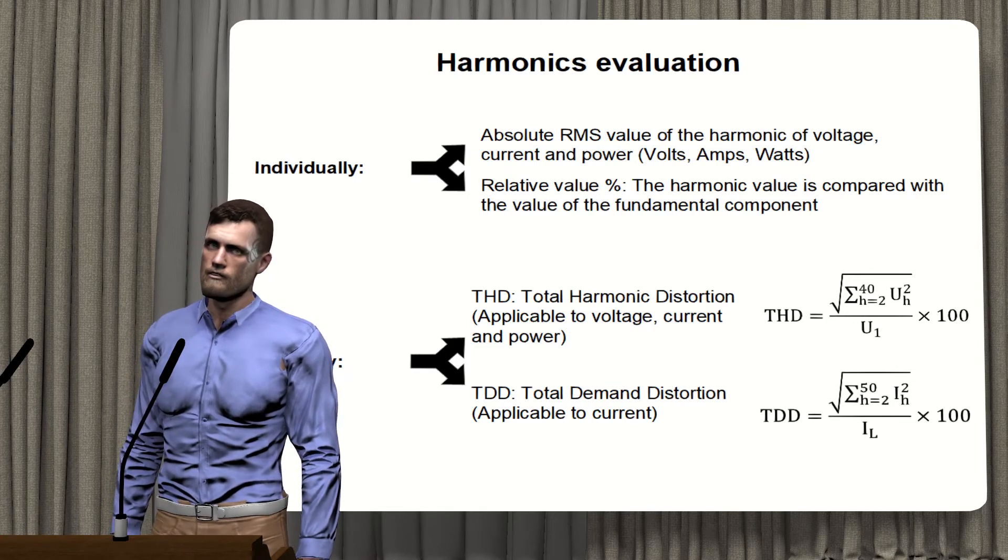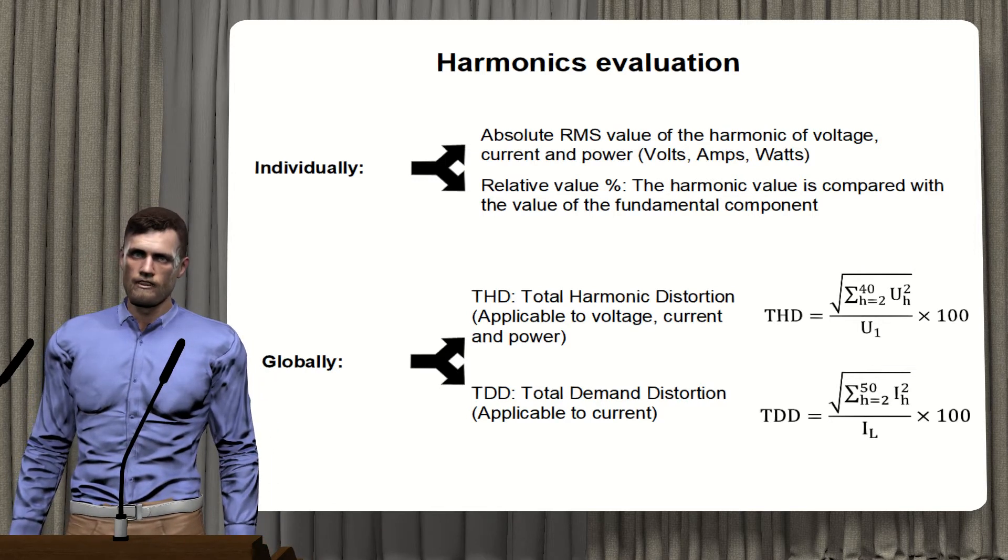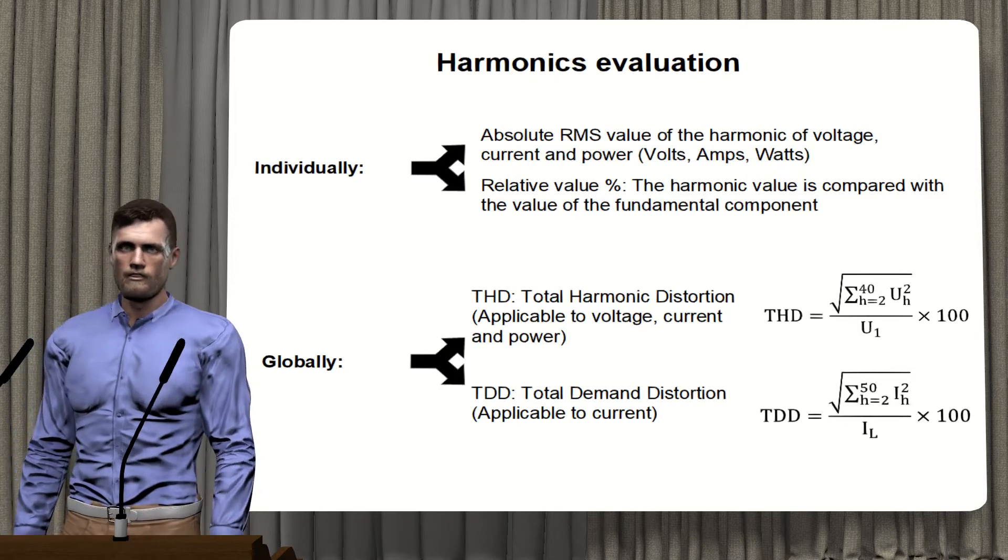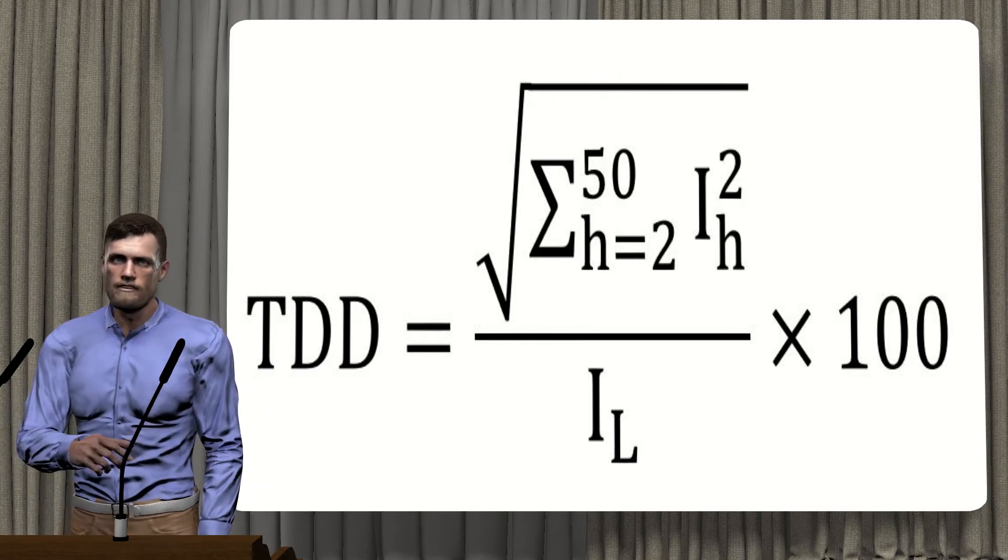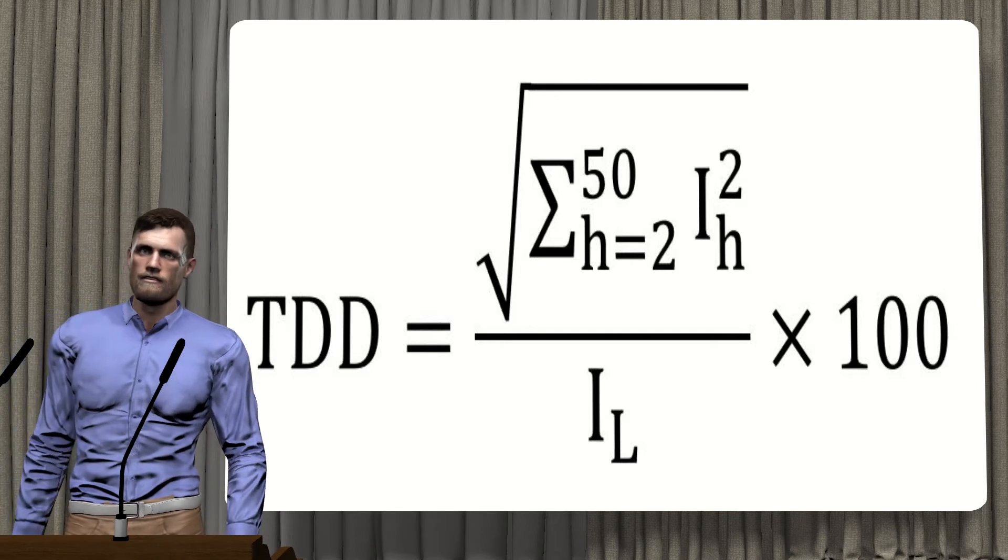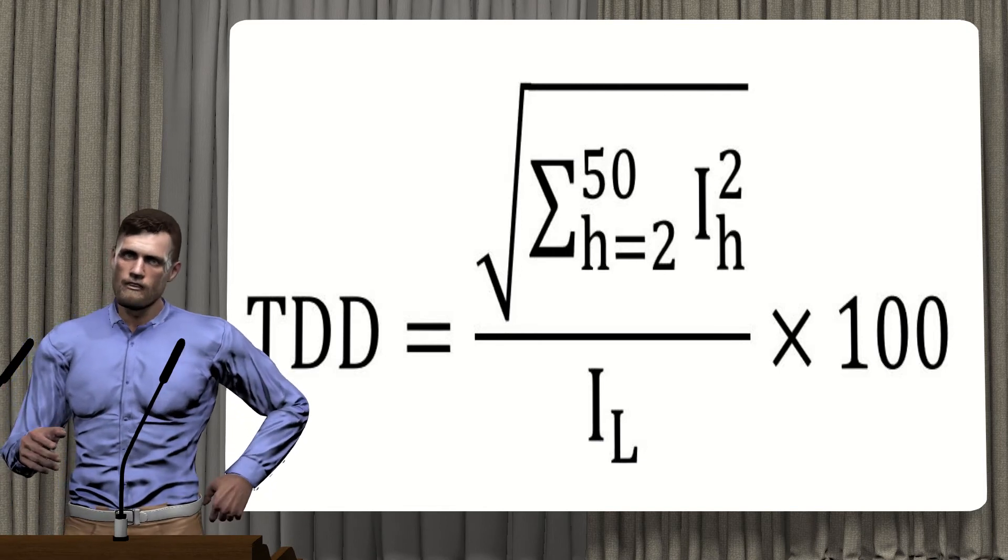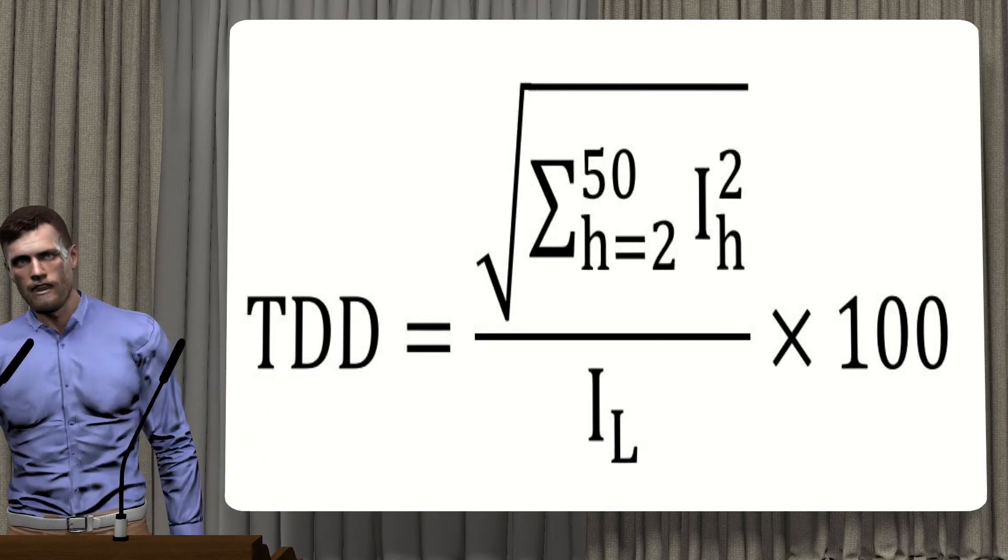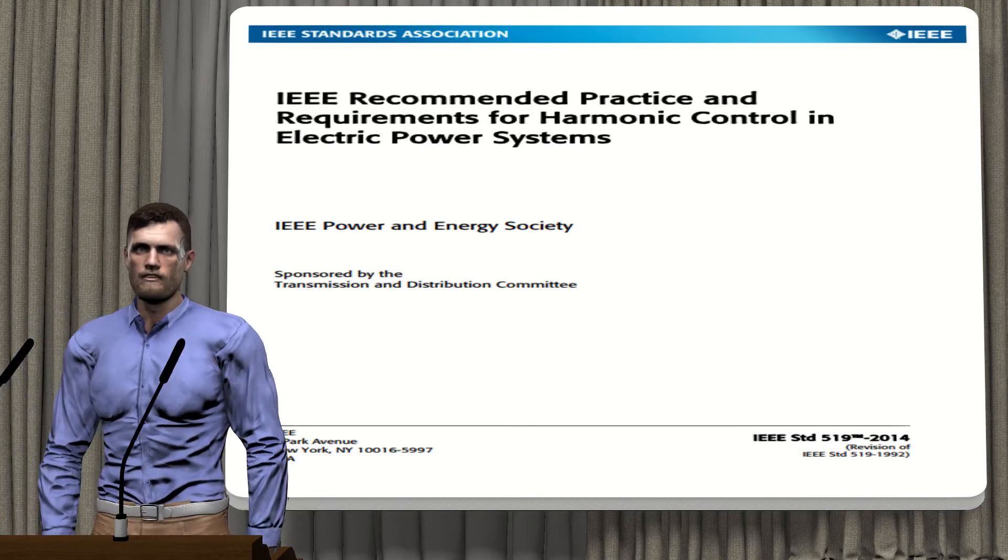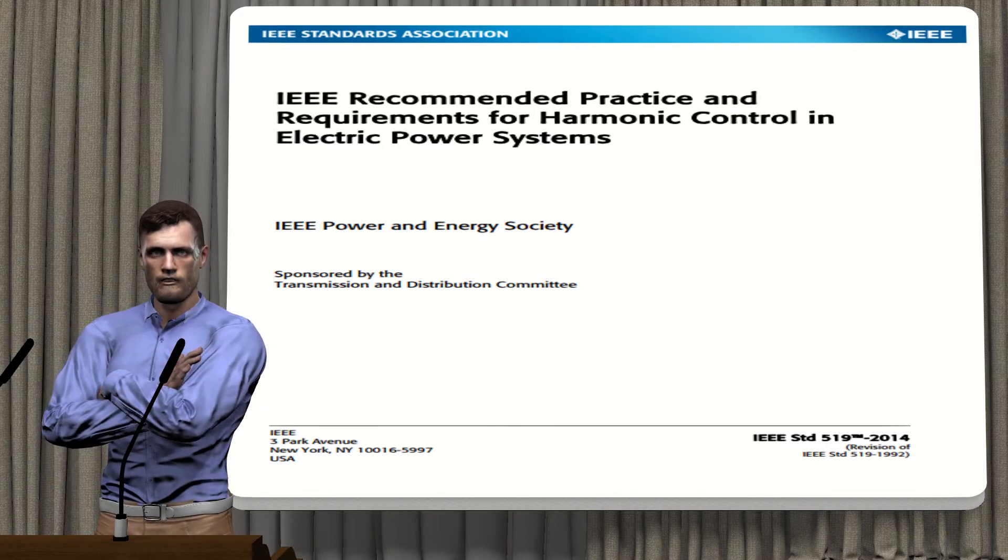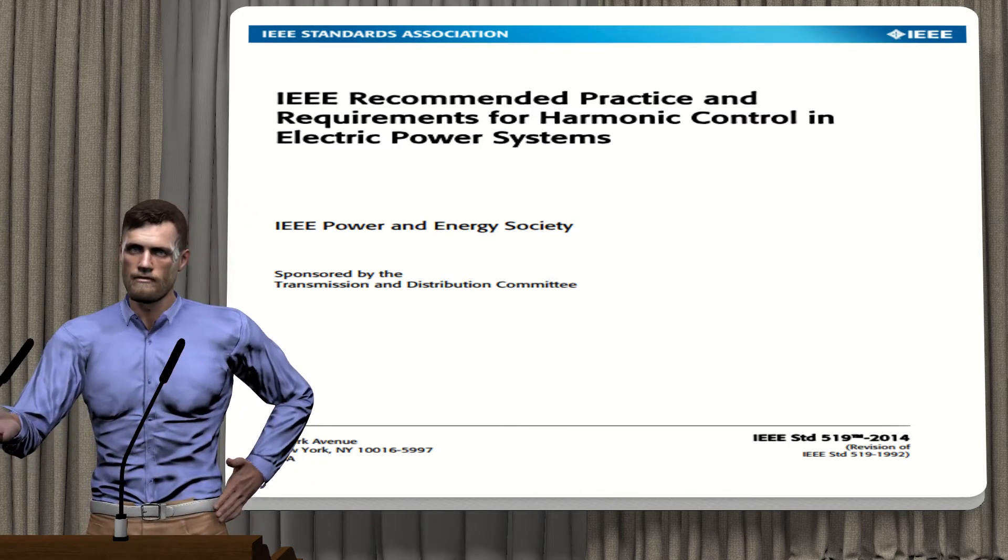The formula for TDD is similar to that of THD, but if we look at the denominator, we will see that now the parameter IL appears, which is the maximum current demanded. In this way we are comparing the impact of current harmonics in relation to the maximum current of the installation, which will give us a better vision of the load level that harmonics represent. The standard N5160 is applicable only to the quality of the voltage, so it does not establish limits regarding harmonic contamination in current. In this case we can use the IEEE 519 standard, which does establish a limit to the TDD value, depending on the value we obtain for our installation of dividing the maximum short circuit current by the maximum current demand, as we can see in the picture.